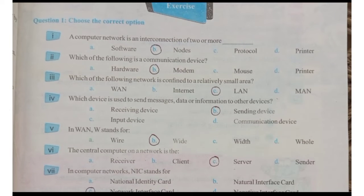The first question is that a computer network is an interconnection of two or more. The correct option is nodes. Nodes are devices or machines.